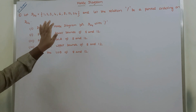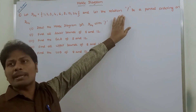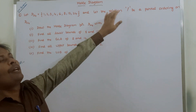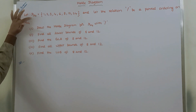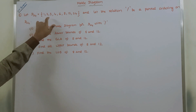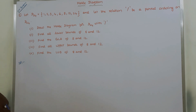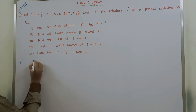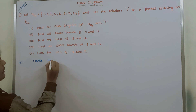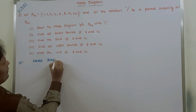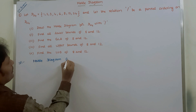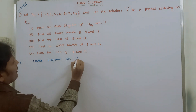For the first part, the given relation is the divisibility relation. The divisors of 24 are the set {1, 2, 3, 4, 6, 8, 12, 24}. The first step is to draw the Hasse diagram for D24.